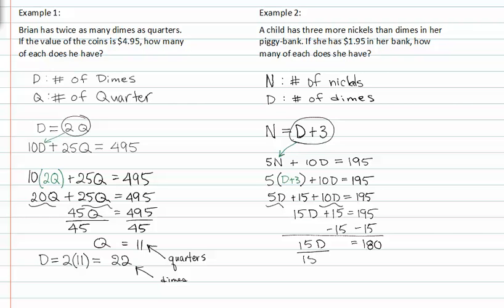If we divide both sides by fifteen, we get d is equal to twelve. And we know nickels are equal to d plus three, which is equal to twelve plus three. So the number of nickels she has is fifteen — she has twelve dimes and fifteen nickels.